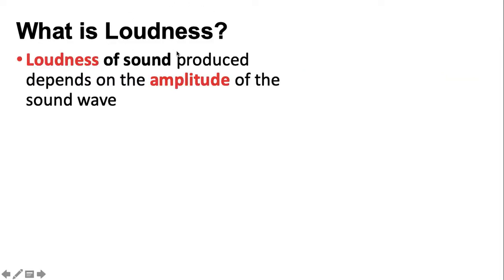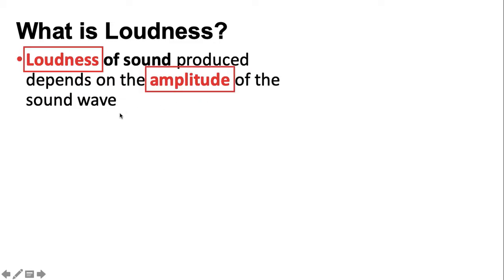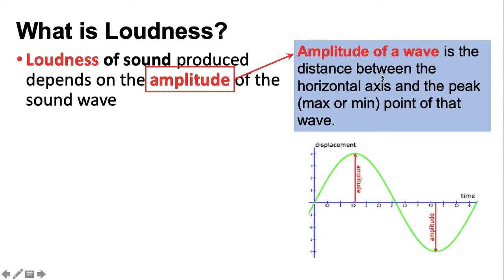Loudness of sound produced depends on the amplitude of the sound wave. Amplitude of a wave is the distance between the horizontal axis and the peak, either the maximum or minimum point of that wave.